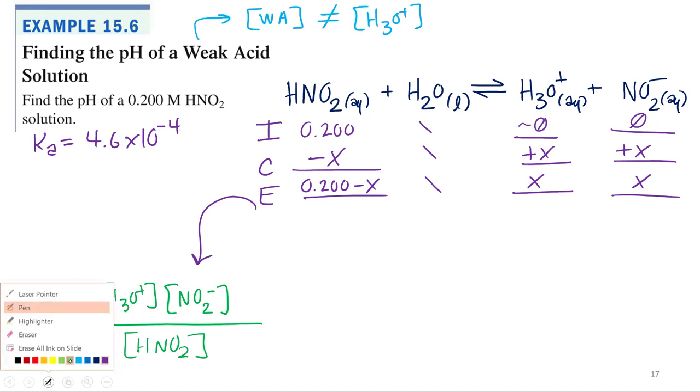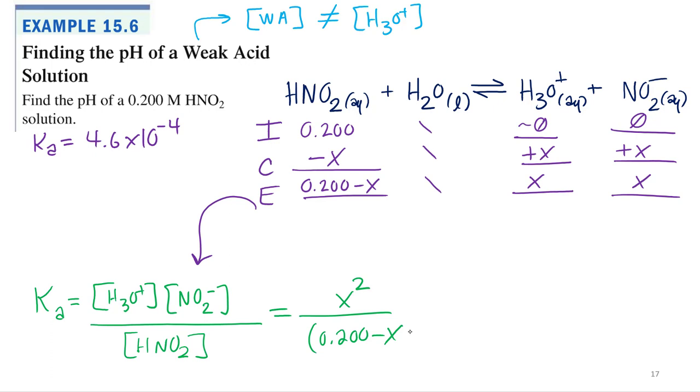Let's input these values. Hydronium times nitrite all over 0.200 minus X. X times X is just X squared. We've got an X squared and an X. We're going to need a quadratic formula. Wait, the Ka is small. Could we possibly do X is small approximation?